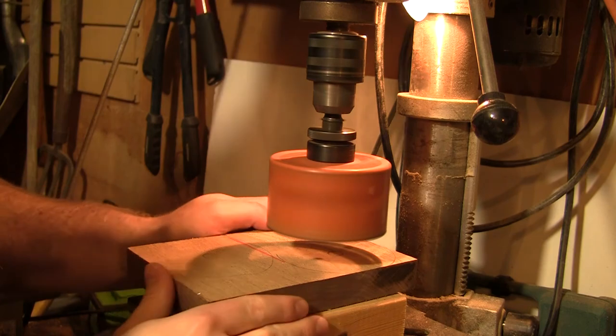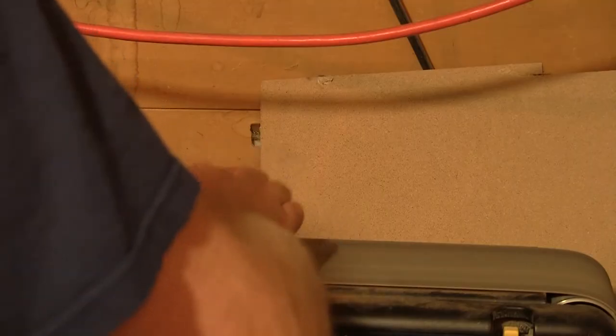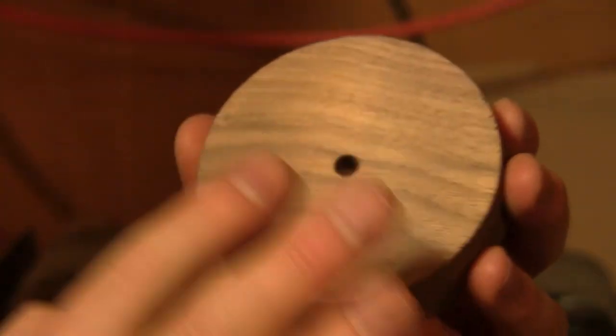With a hole saw, I marked out and then cut two circles out of the walnut, and then cleaned them up on the table sander to get rid of the burrs and chips, being careful not to damage their shape.